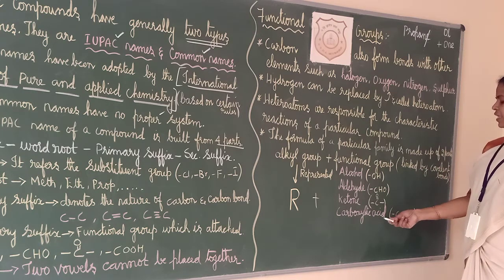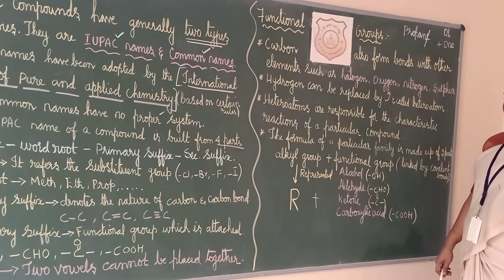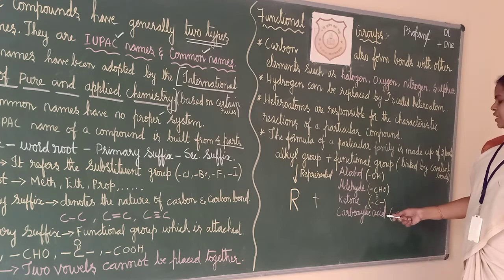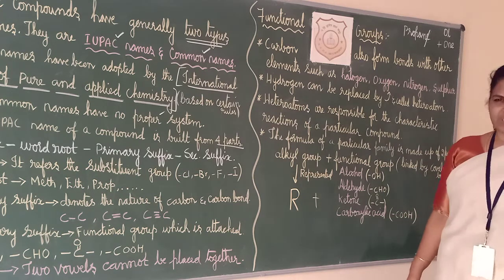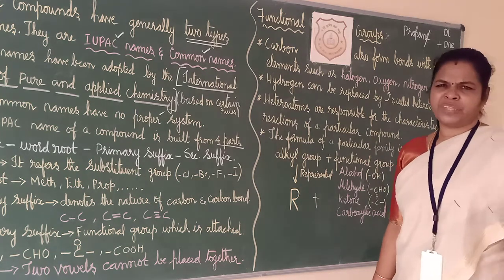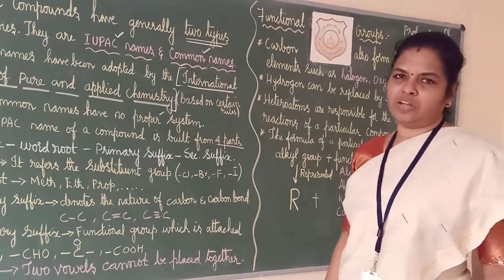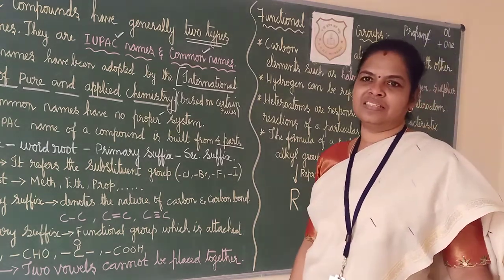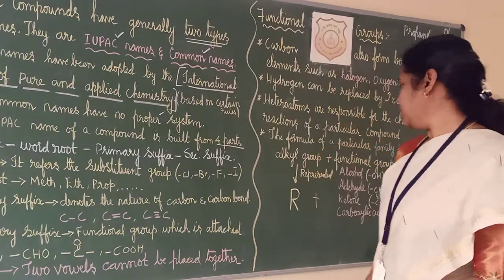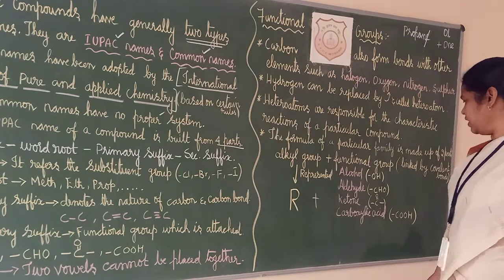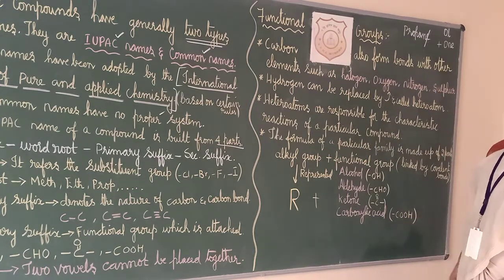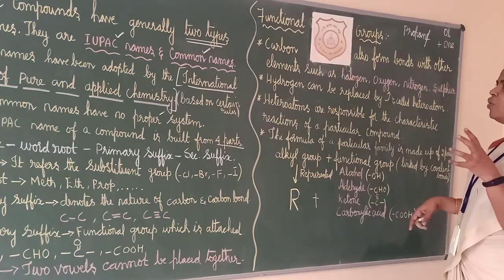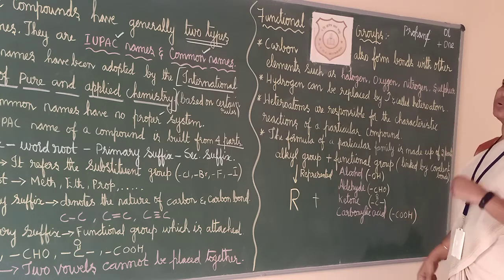Then carboxylic acid. For carboxylic acid, acid should be there in the name. For example, methanoic acid and ethanoic acid — the suffix should be added the same way. Now we will come to study about functional groups.